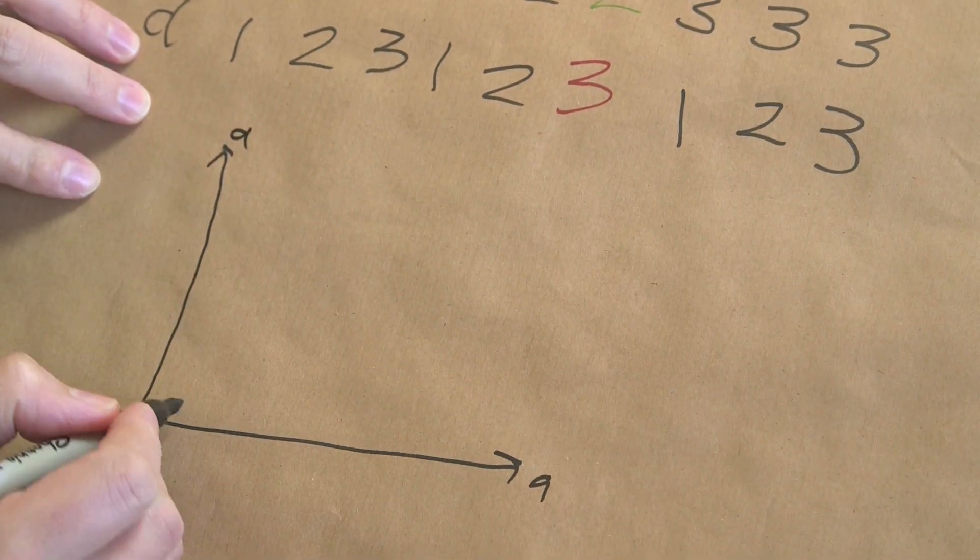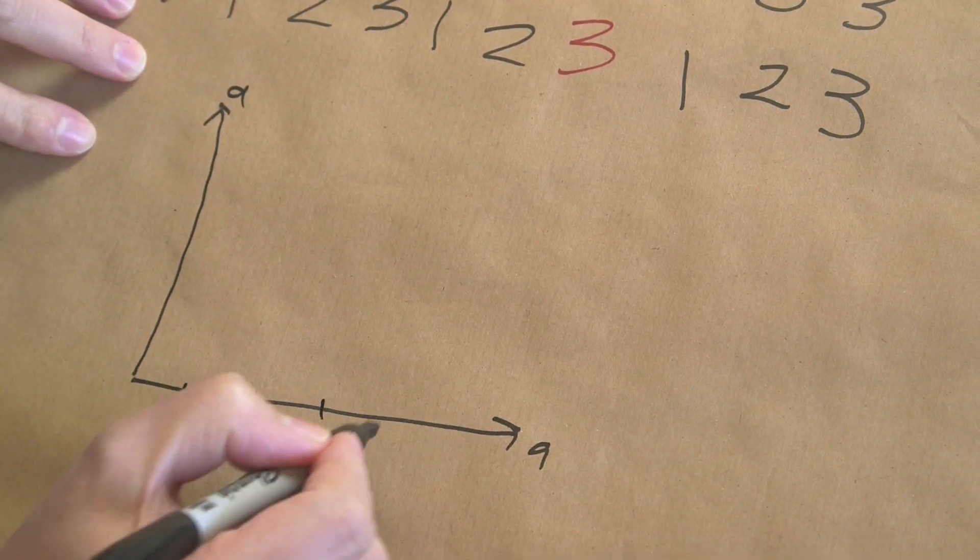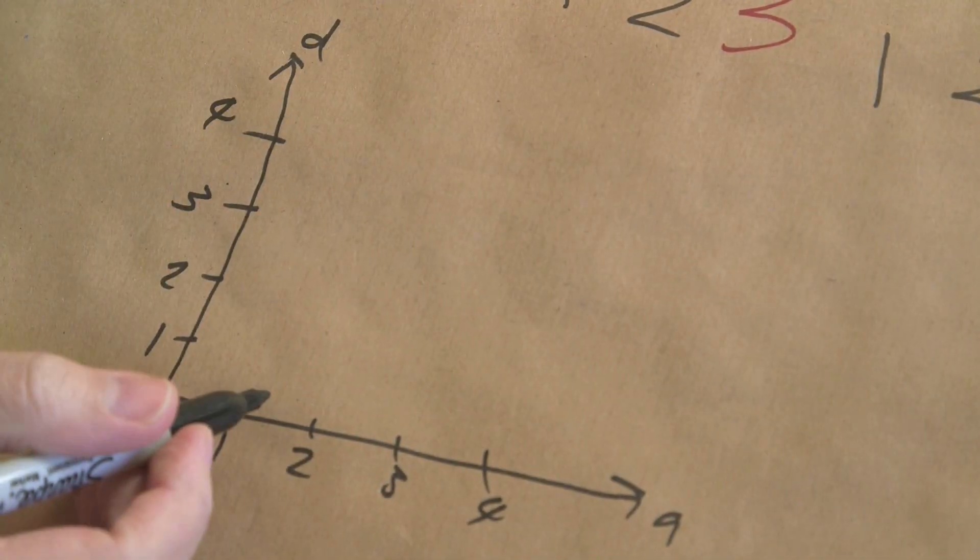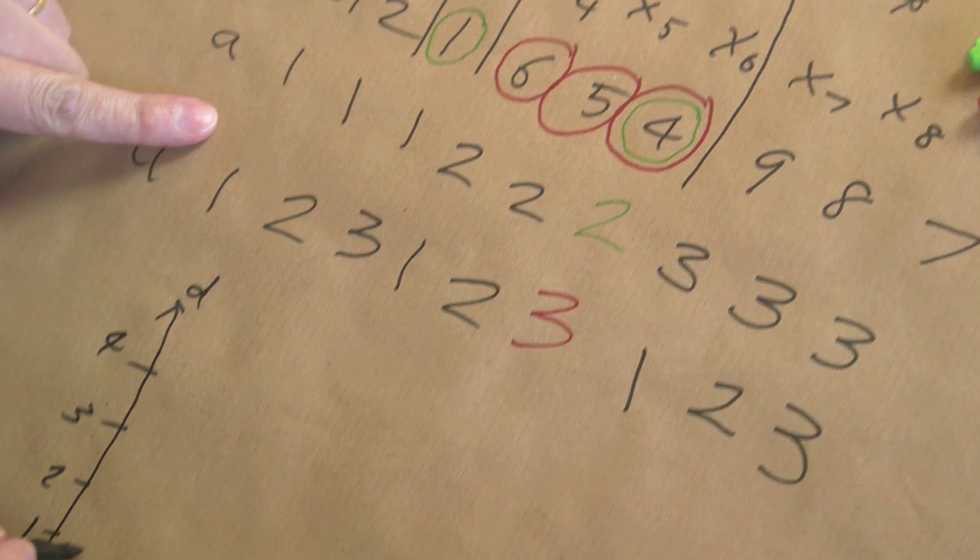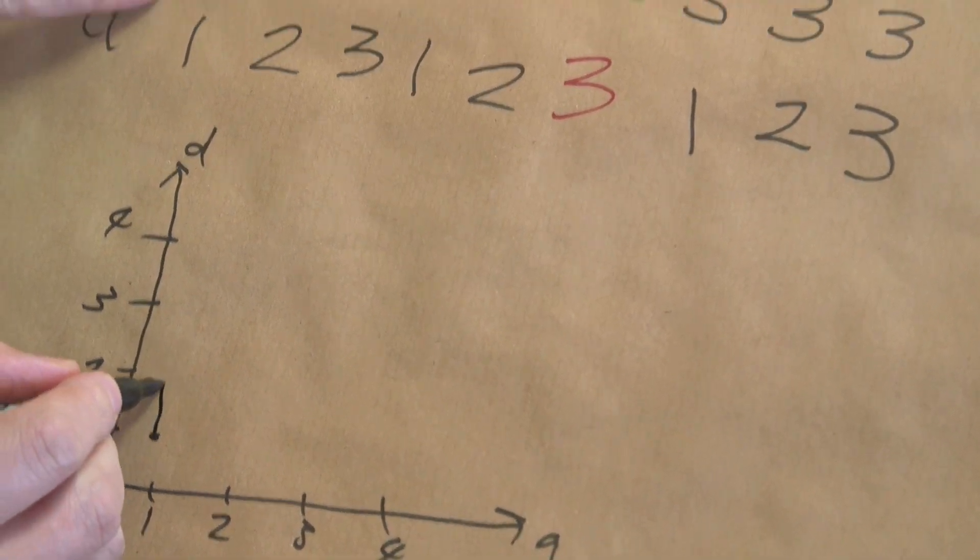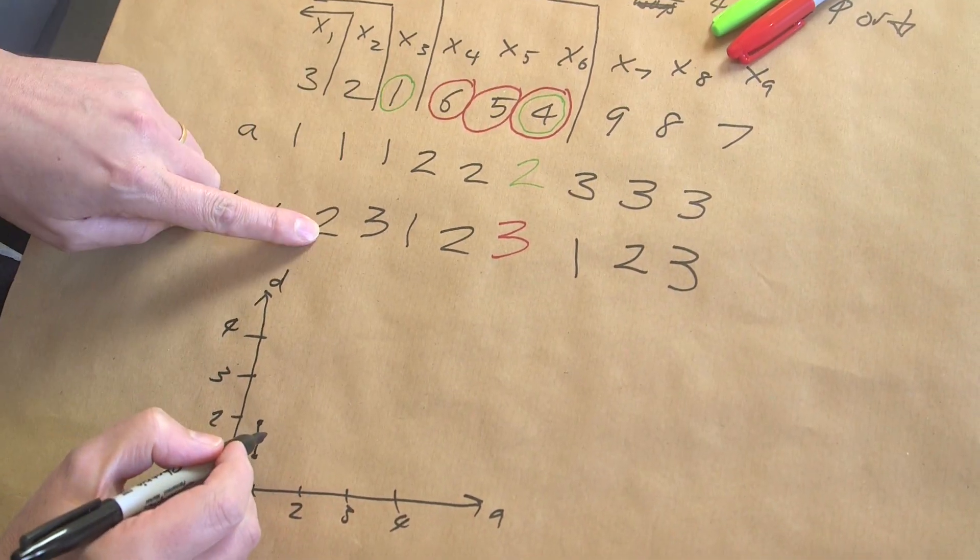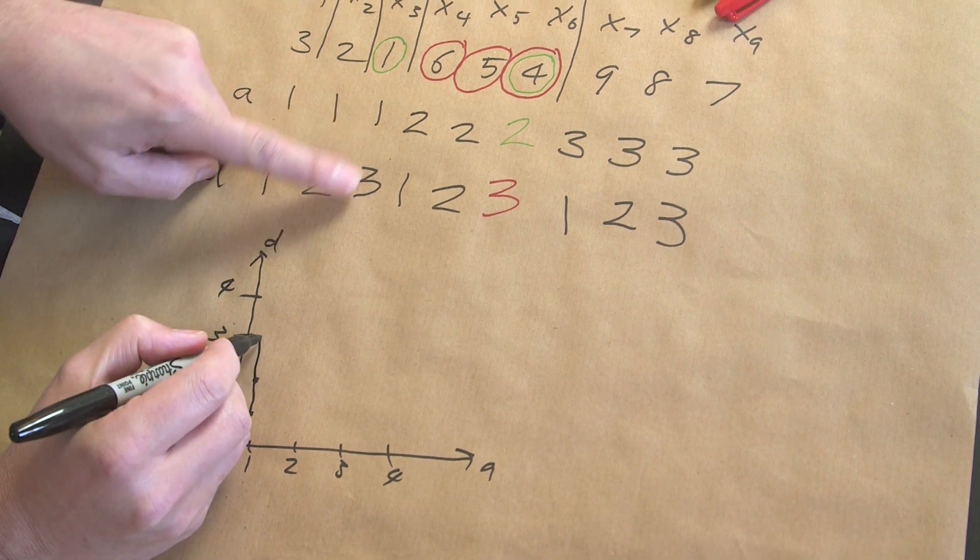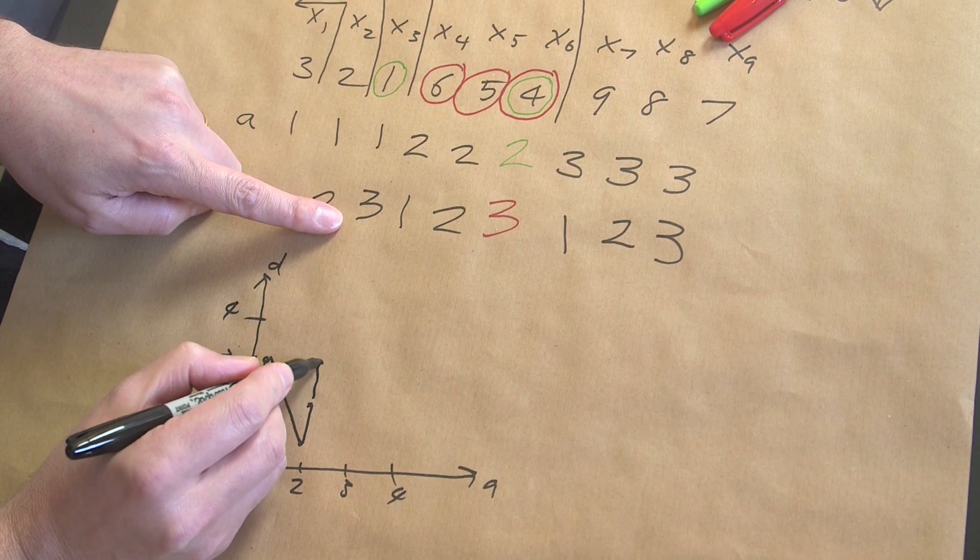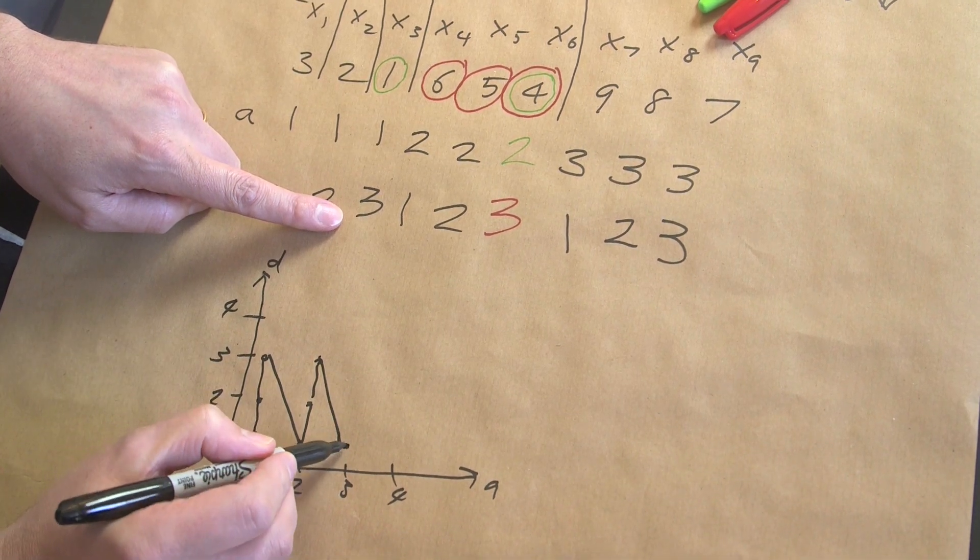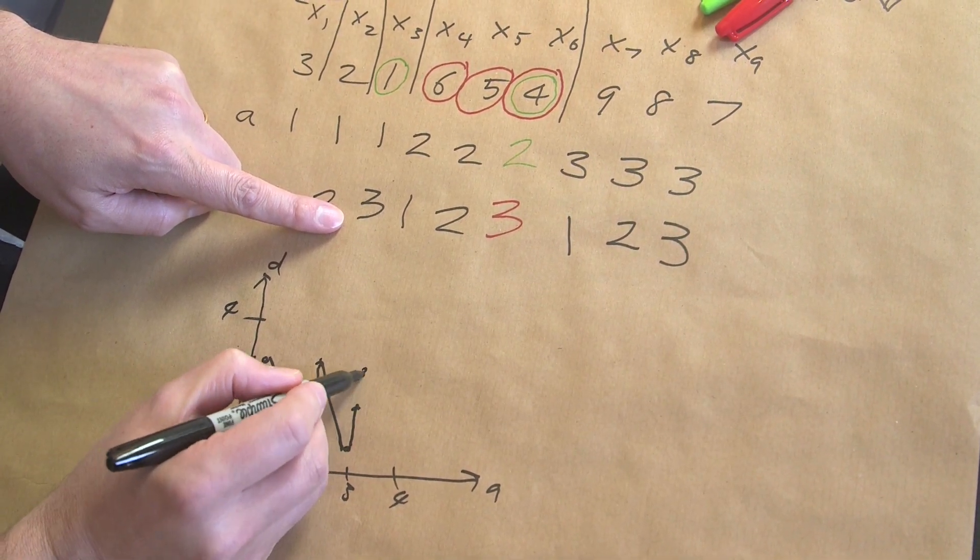Where I'm graphing against ascending and descending, so we have one, two, three, four. So now if we map this, it's like a bit of a path. You can see that it goes from one to one, up here to one, two, up here to one, three, and then it goes down, up, up, down, up, up.